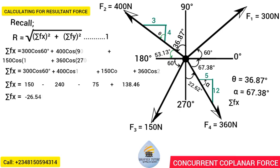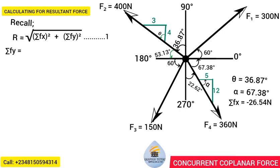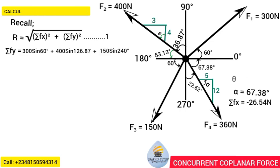The beauty of this method is that to find ΣFy, we simply replace all cosines with sines. So ΣFy equals 300 sin 60 plus 400 sin 126.87 plus 150 sin 240 plus 360 sin 292.62.